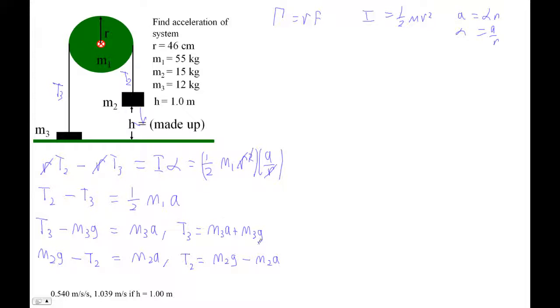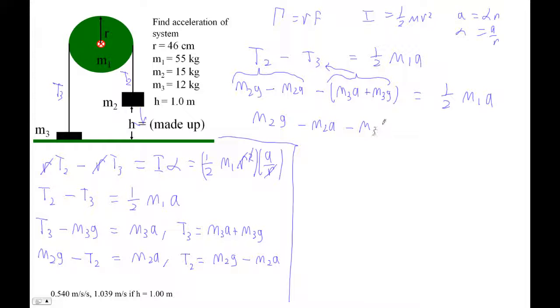Now we're going to substitute these guys into here and get an expression that has only A's and G's and M's in it. So let's write this expression again. T2 minus T3 equals 1 half M1 A. Now T2 is this guy, so we've got M2 G minus M2 A. That's this guy. And then minus, and then here's T3, M3 A plus M3 G, and that's this guy, equals 1 half M1 A. Wow, look at that substitution. And then we have to distribute the minus sign here. So the next line is M2 G minus M2 A minus M3 A minus M3 G equals 1 half M1 A.